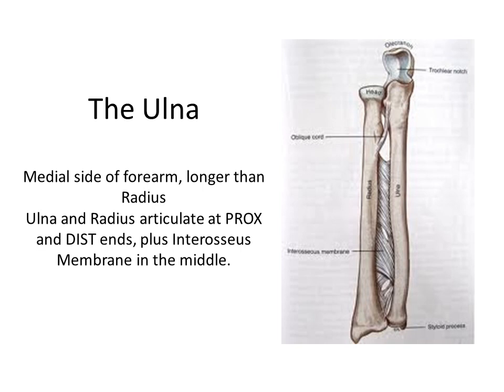Looking at the radius and ulna side by side: the head of the radius is located proximally near the elbow, while the head of the ulna is distally near the wrist joint and is also medial, while the radius is lateral. Both the radius and the ulna have a styloid process, and both styloid processes are located toward the outside of the forearm.